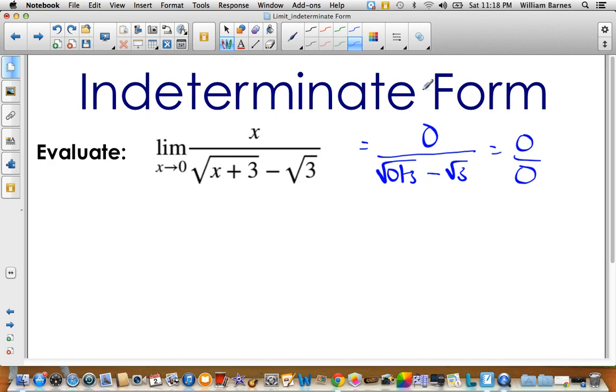So 0 over 0 is one of the indeterminate forms that we see in calculus. And basically when that happens, there's a limited number of things that we can do. In the last video I talked about factoring. In this video I'm going to talk about using the conjugate. This is probably one of the most common calculus questions that I've seen, and my students will see in my calculus class.